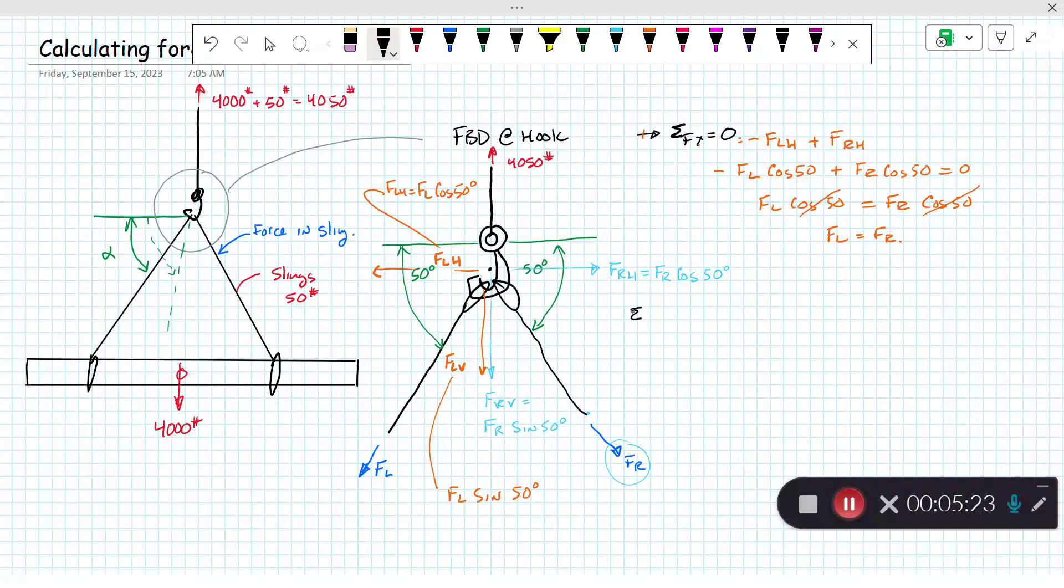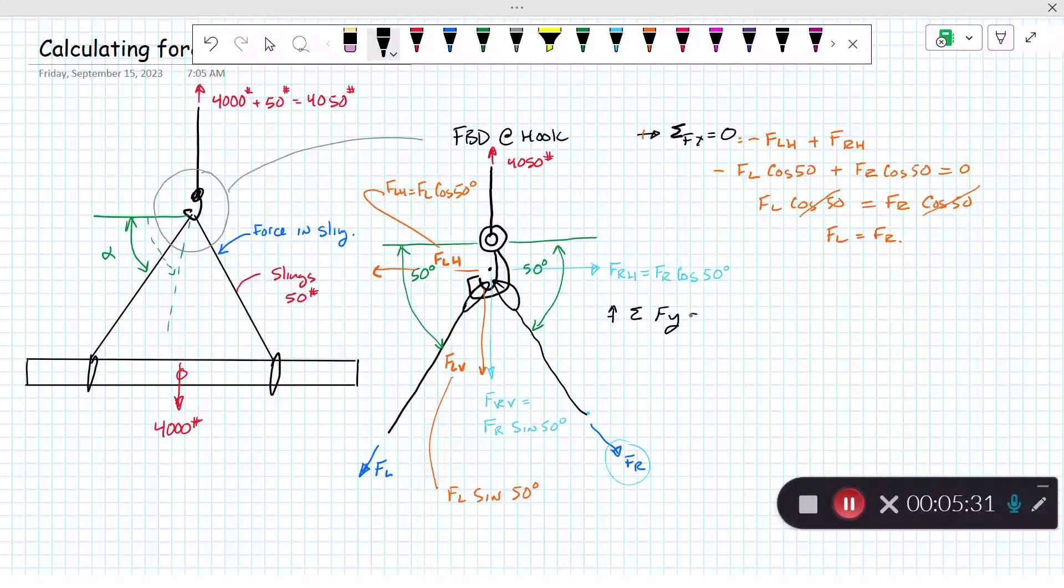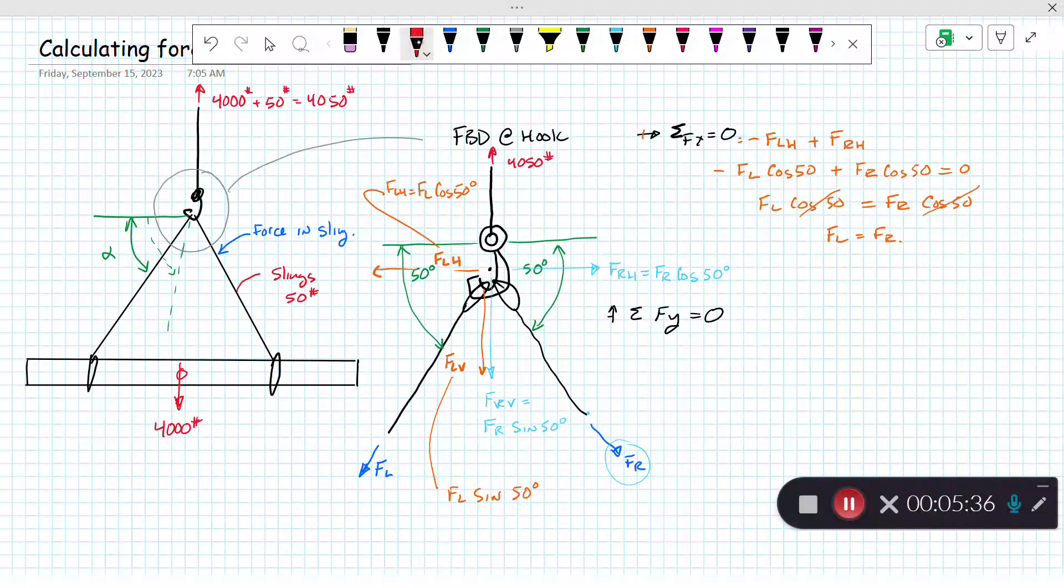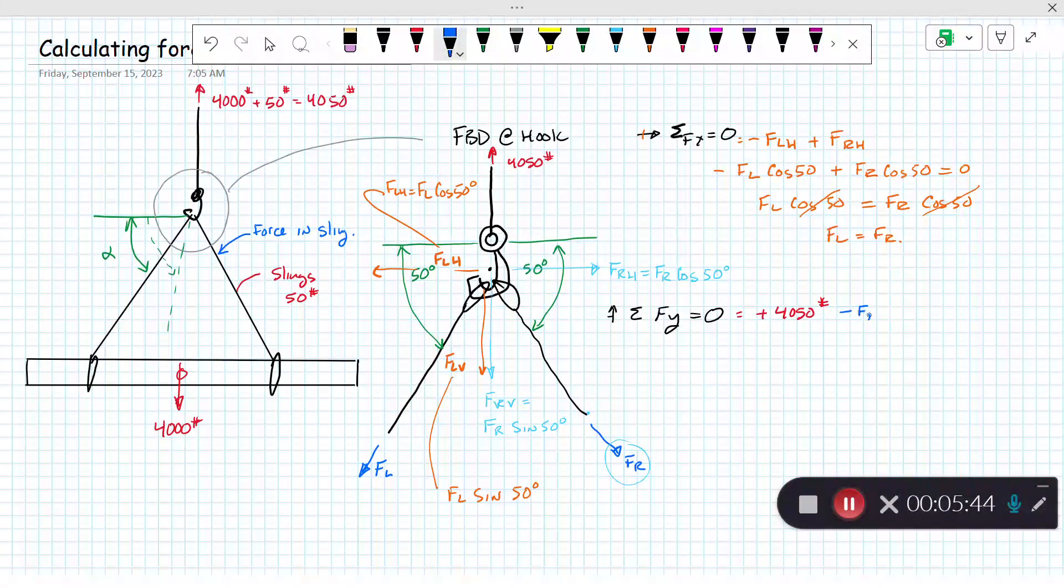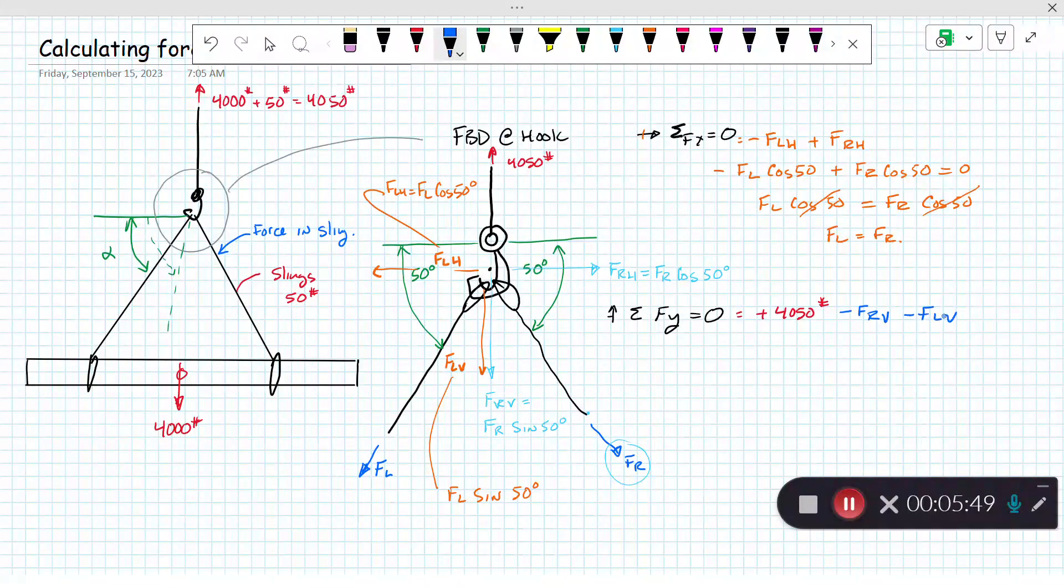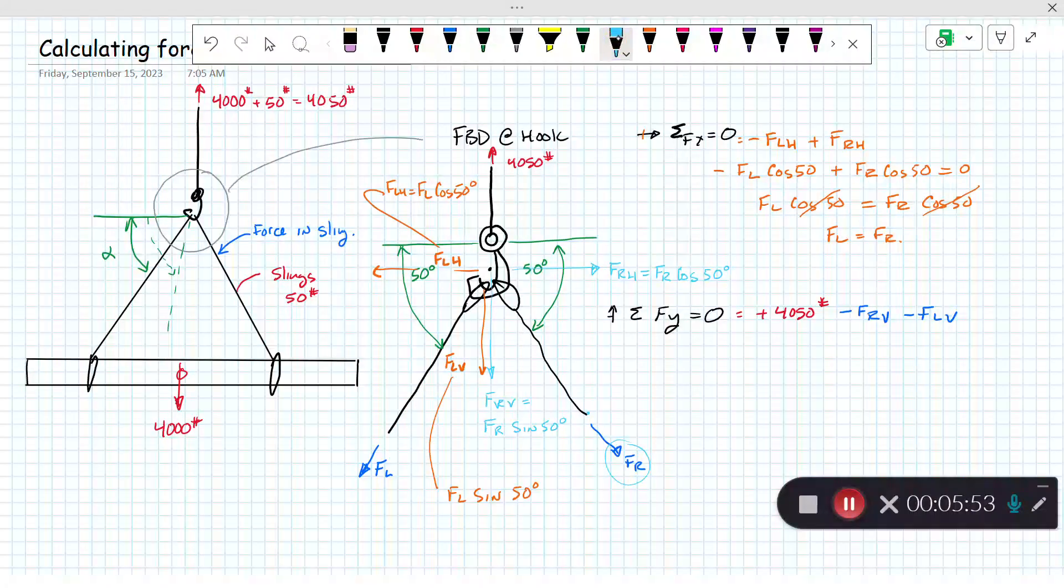Next thing we're going to do is sum our forces in the y direction, up being positive, and they all have to equal zero. Let's start at the top. We have a plus 4,050 pounds and we get a minus FRV and minus FLV.